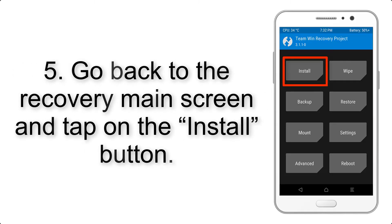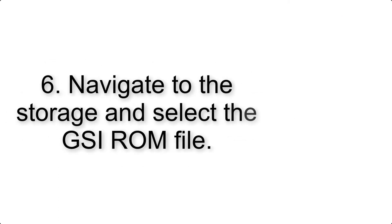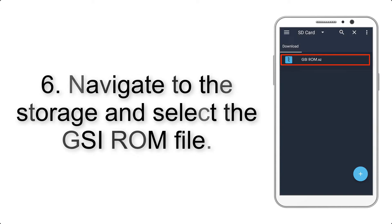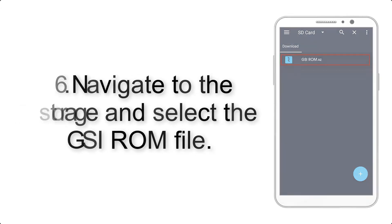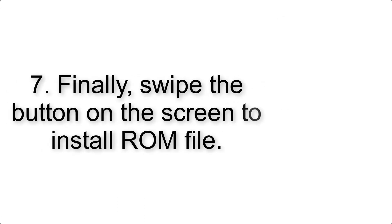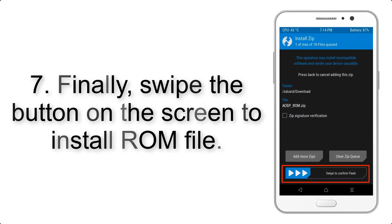Step 4: Swipe the button to wipe the device. Step 5: Go back to the recovery main screen and tap on the Install button. Step 6: Navigate to the storage and select the GSI ROM file. Step 7: Finally, swipe the button on the screen to install the ROM file.